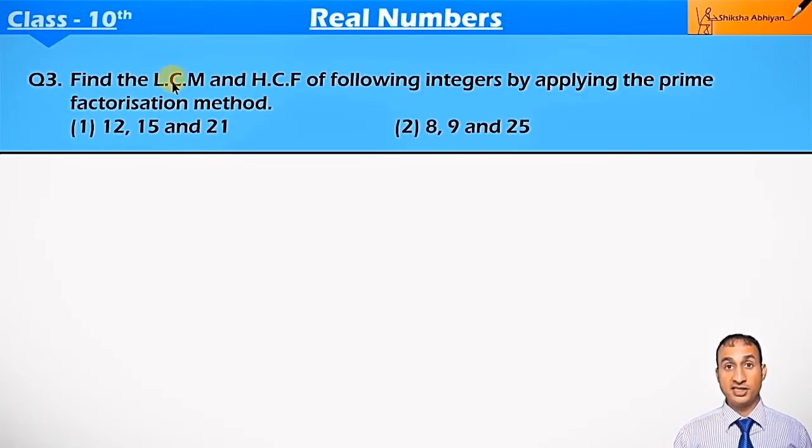See the question. Find the LCM and HCF of following integers by applying prime factorization method. You can see both parts. The first part has three numbers: 12, 15, and 21.